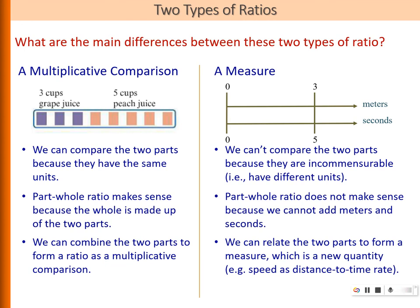An example of such a measure is speed, which is a quantity used to measure fastness. Normally, we can see it as a rate of change of distance with respect to time. So if you want to talk about speed, you are actually relating two different quantities — distance and time. That's the use of ratio as a measure.